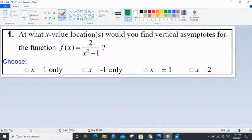They asked us to find the vertical asymptote. So to find the vertical asymptote, we will always look at the bottom part of the equation.